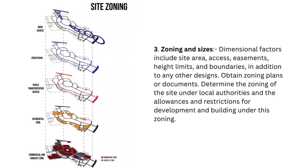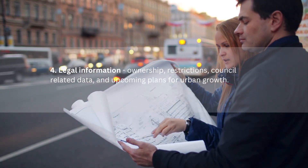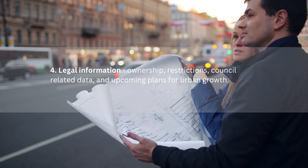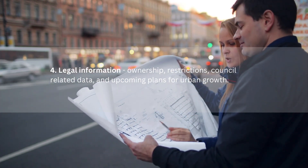Number three, zoning and size. Dimensional factors include site area, access, easements, height limits and boundaries, in addition to any other design considerations. Obtain zoning plans or documents. Determine the zoning of the site under local authorities and the allowances and restrictions for development and building under this zoning. Number four, legal information — ownership restrictions, council-related data and upcoming plans for urban growth.